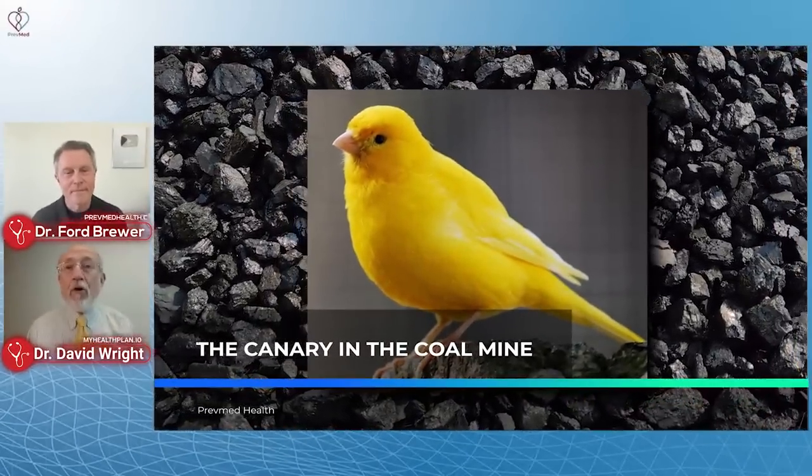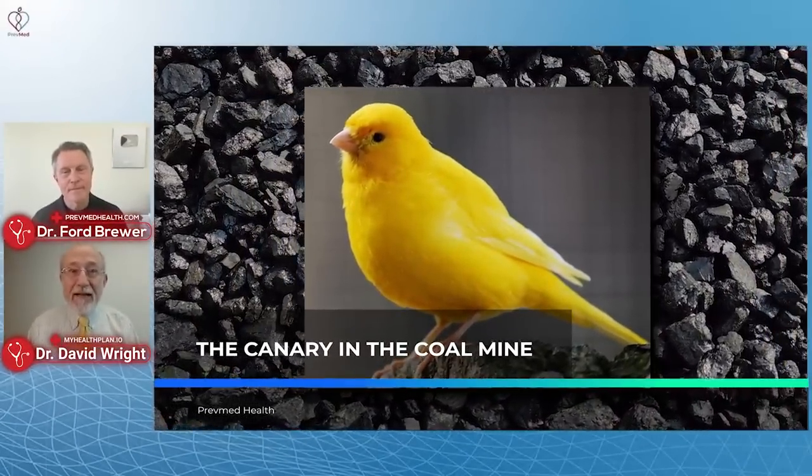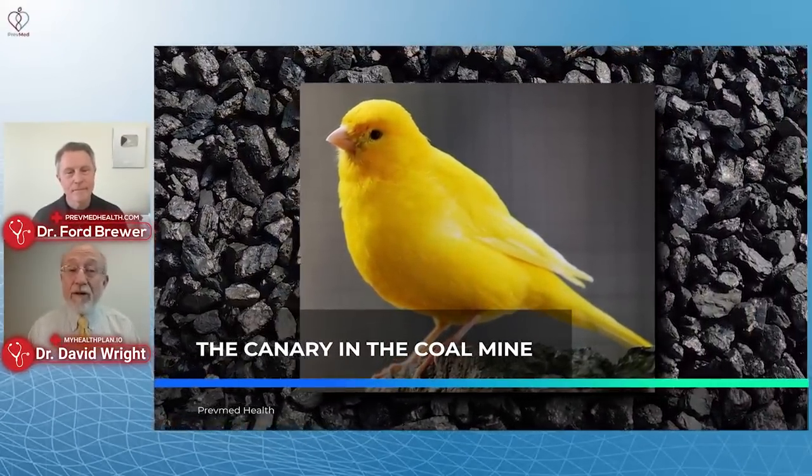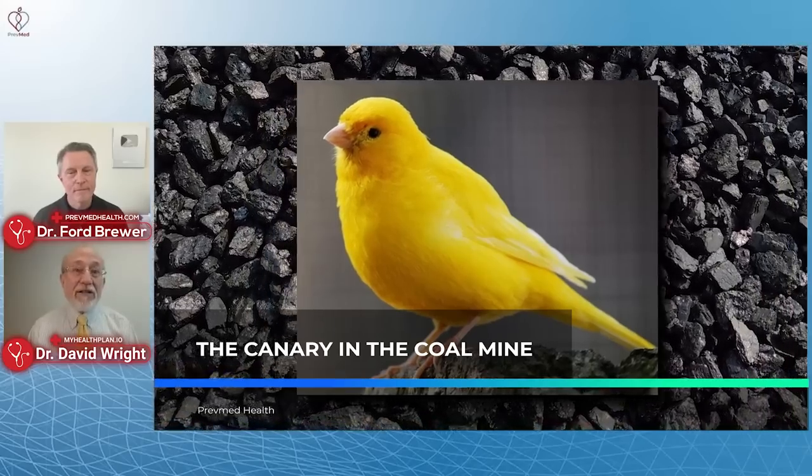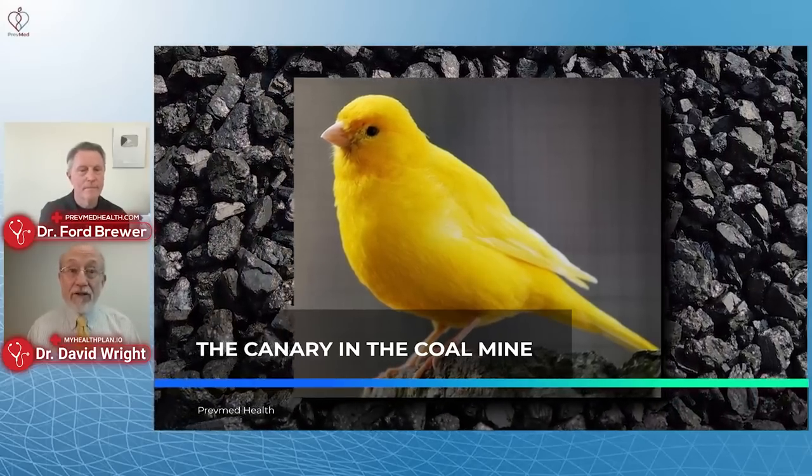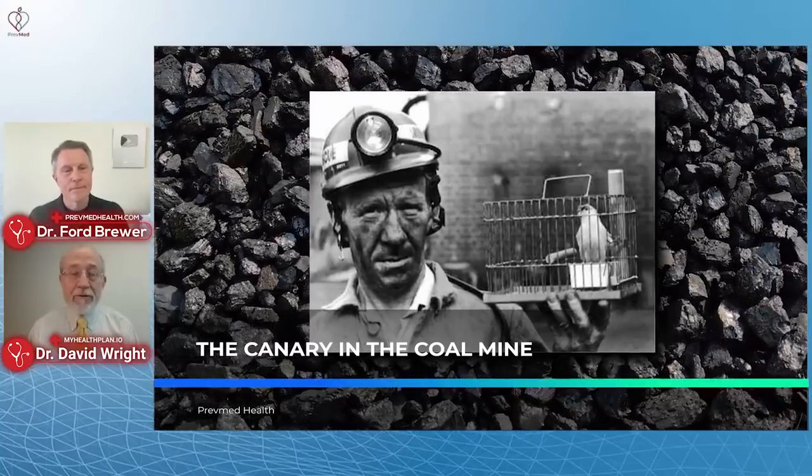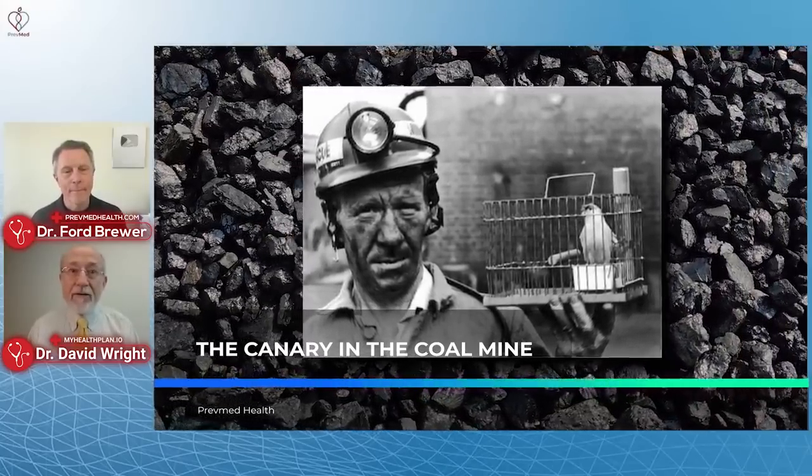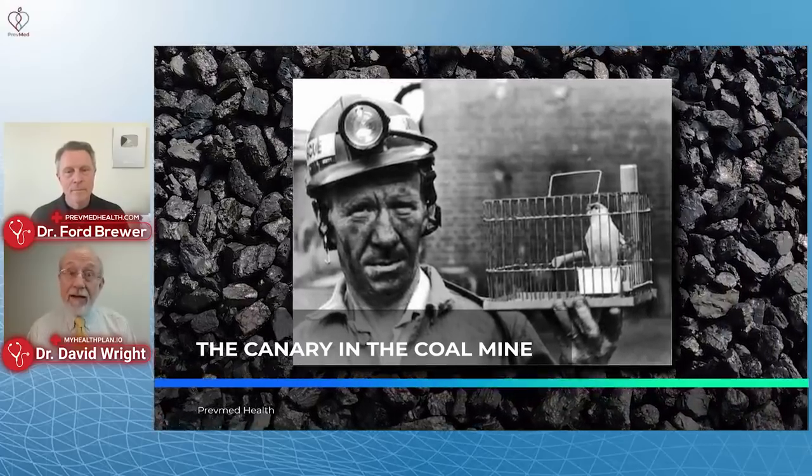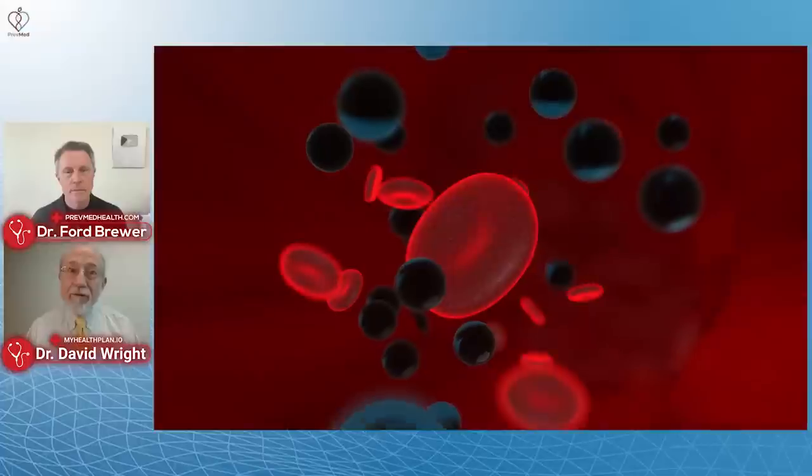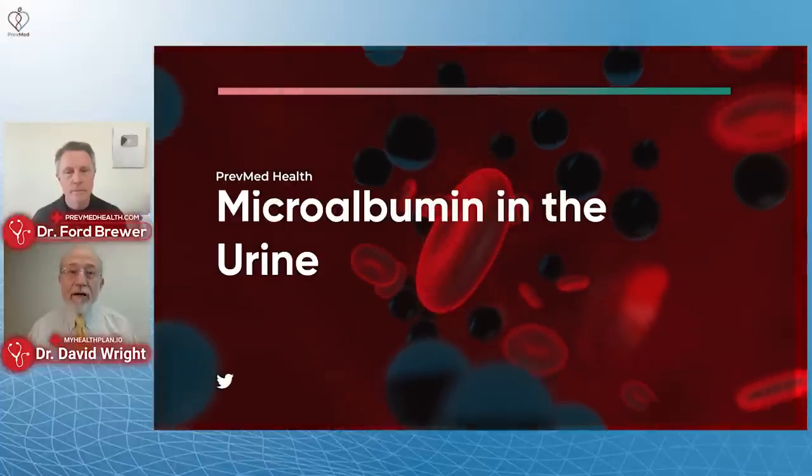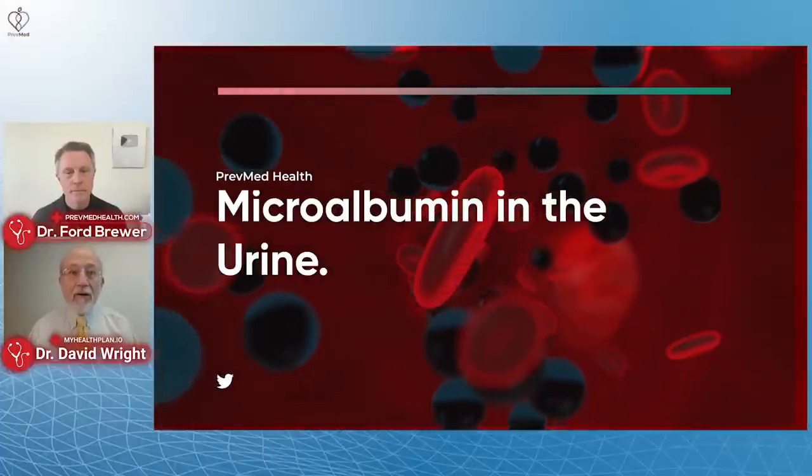As a canary in the coal mine, miners used to take canaries down with them. And maybe they do this still in some undeveloped countries. Because canaries are very sensitive to not enough oxygen in the air, which can happen underground in mines. And so coal miners for decades would take canaries down in the mines. And if the canary fell off its perch, they knew they needed to get out of the mine. Well, if your canary falls off the perch, if you've got microalbumin in your urine, you need to get out of the events that are damaging your arteries. You need to find those root causes so that you can run to safety.